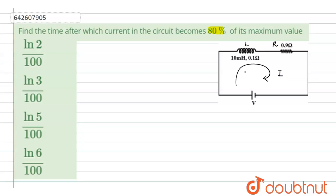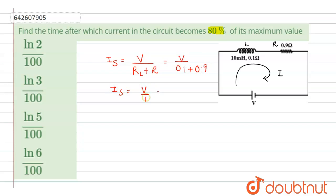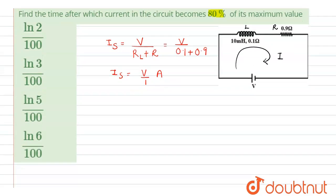The maximum current will be in the circuit. For maximum current, the voltage across resistance and inductor is V divided by the total resistance across L plus the external resistance. Here V is V, resistance across L is 0.1 and the external resistance is 0.9. So the maximum current IS = V divided by 1 ampere, which equals V.